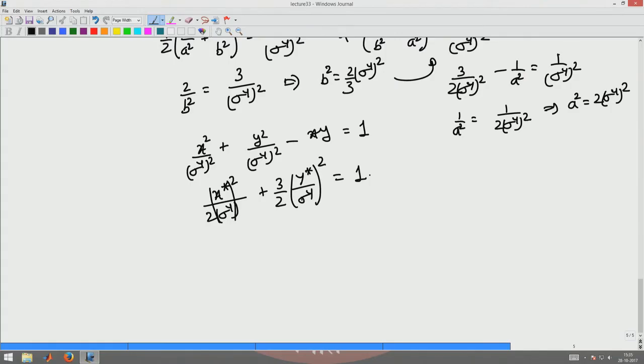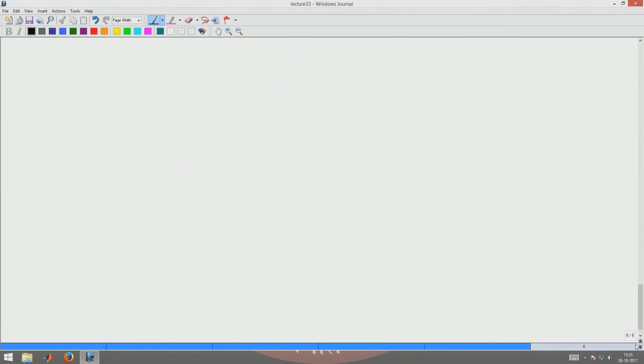Now let us look at the other remaining failure theories which are for pressure, hydrostatic pressure sensitive materials. Next failure theory that we are going to look up is what is called as the maximum normal stress or Rankine criteria.